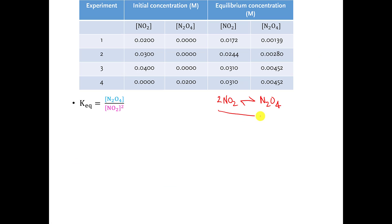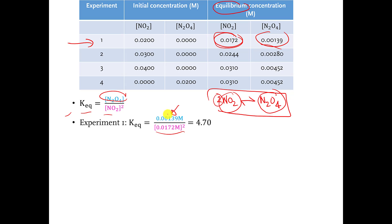So here's our reaction. The formula for the equilibrium constant is going to be the concentration of N2O4 raised to the first power divided by the concentration of NO2 raised to the second power, as long as we're at equilibrium. So let's pick experiment 1. We're going to use these numbers because those are the equilibrium concentrations. We're going to have the concentration of N2O4 at equilibrium as 0.00139 molar, and then it's going to be divided by 0.0172 molar squared.